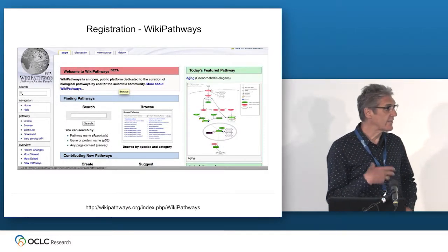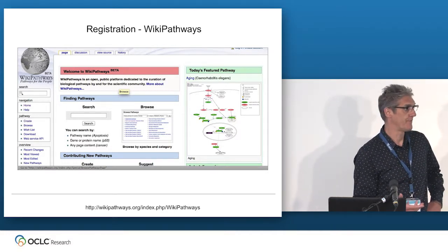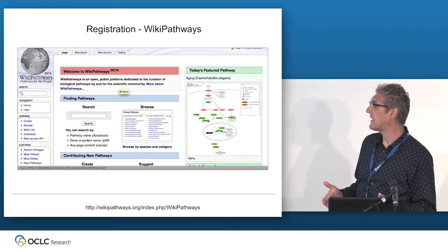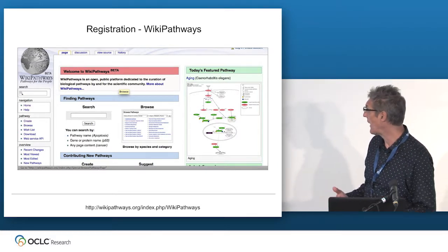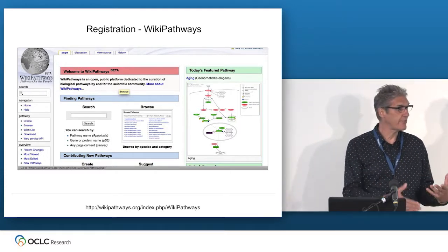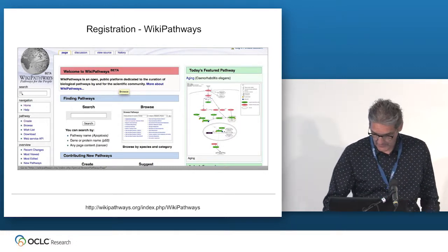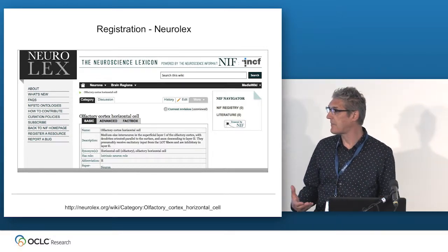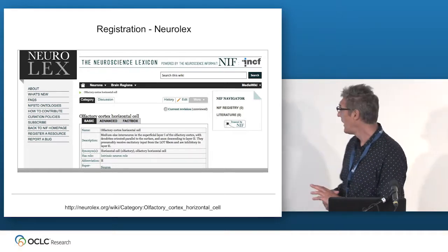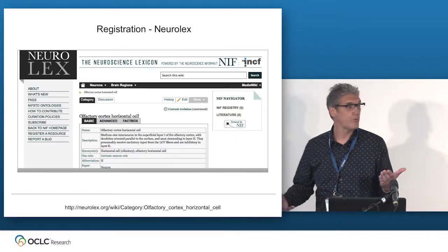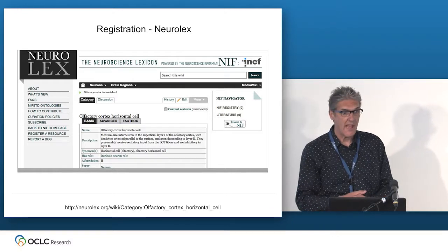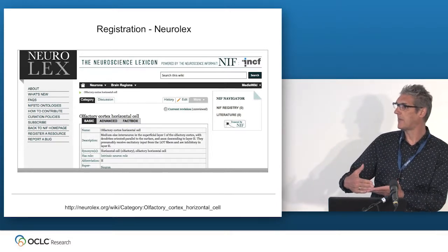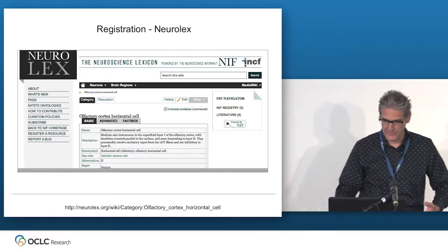There's increased use of common web platforms for scholarly purposes. WikiPathways is a regular wiki environment used to share biological pathways — and because it's a wiki, it has time-stamping, versioning, and social interaction. Similarly, there's a neuroscience lexicon where vocabulary is collaboratively created by scientists. Terms defined there are used in papers, and obviously vocabulary changes over time — again, you have the notion of time-stamping a particular term's definition and its evolution.